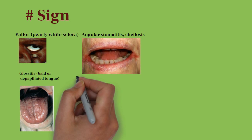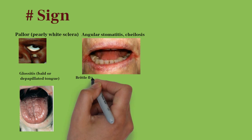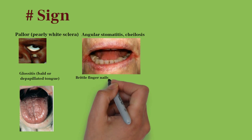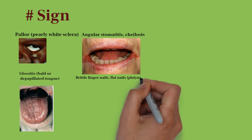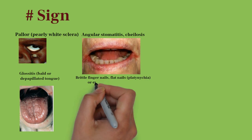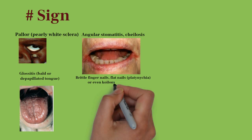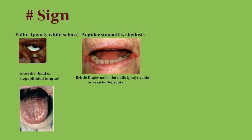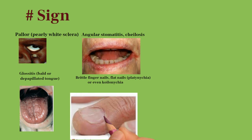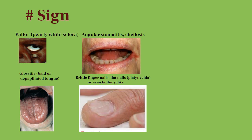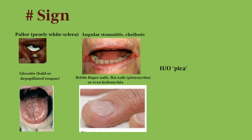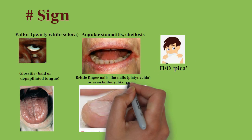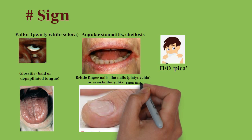If someone carefully examines the nails, platonychia meaning flat nails, or koilonychia meaning spoon-like nails, may be observed in iron deficiency anemia. Sometimes brittle and easily pluckable hairs are also present. If you carefully take the history, patients usually present with a complaint of eating clay or chalk, which is also known as pica.